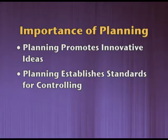Planning establishes standards for controlling. In the controlling function, we compare actual performance with the standard, and after comparison we identify deviations. Once deviations are identified, the organization can understand whether its objectives have been achieved or not. For example, suppose we set a standard that each employee will manufacture 20 units in a day. At the end of the day, it is found that only 15 units were manufactured. The organization must look into the matter and identify why the five units are less.